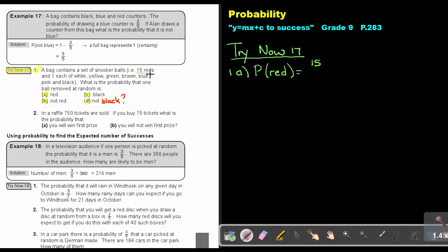Now I must find the total. Now how many? It's 1, 2, 3, 4, 5, 6, 7 colors. So basically it's that 15 plus this other 7. So in total there's 22. So it will be 15 over 22. Now not red,